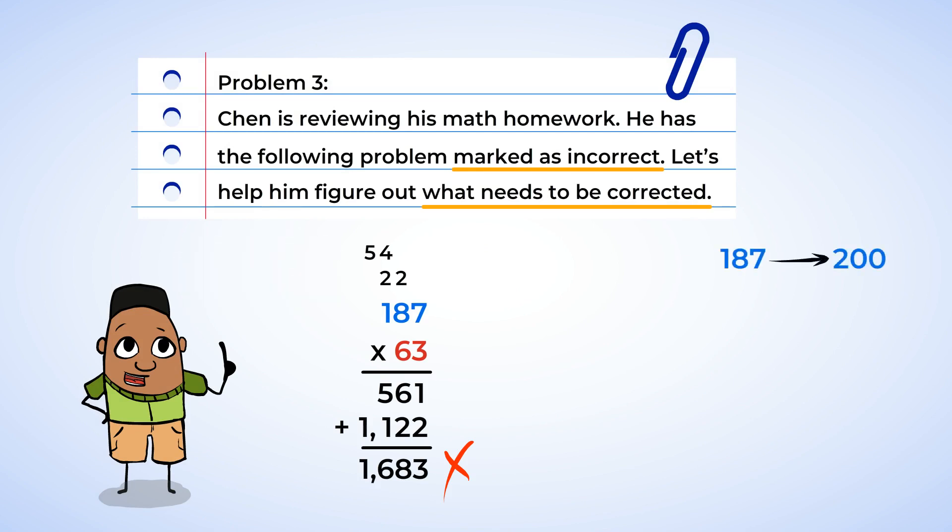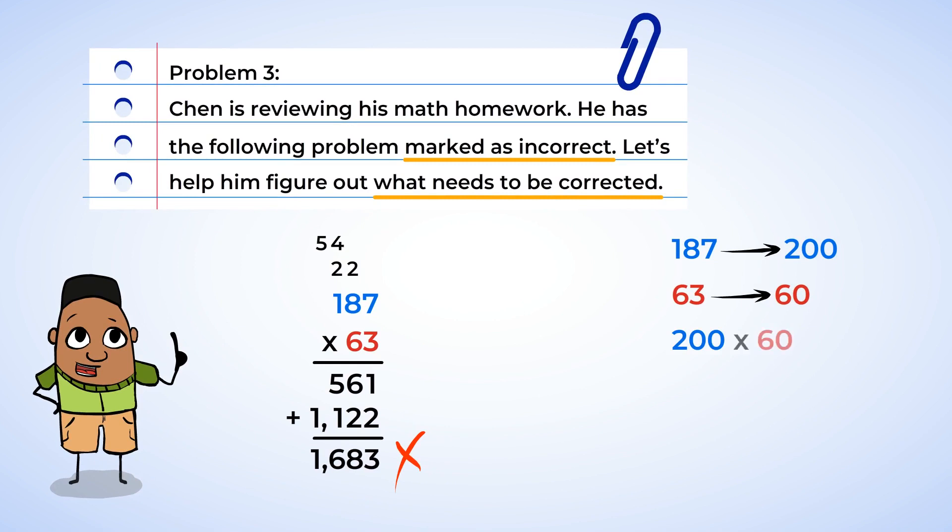We can use estimation to see what the answer should be close to. Well, 187 is close to 200, and 63 is close to 60. So, let's multiply 200 and 60. 200 multiplied by 60 is 12,000. And Chen's answer was 1,683. So, there seems to be a place value missing.